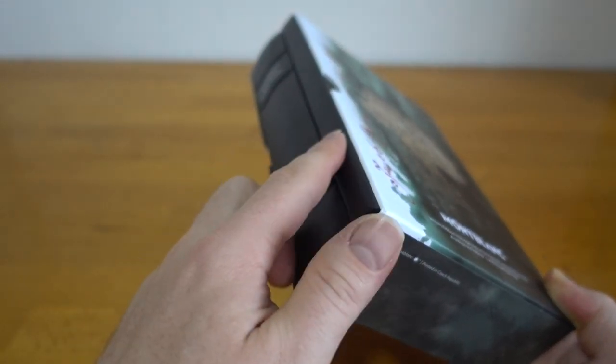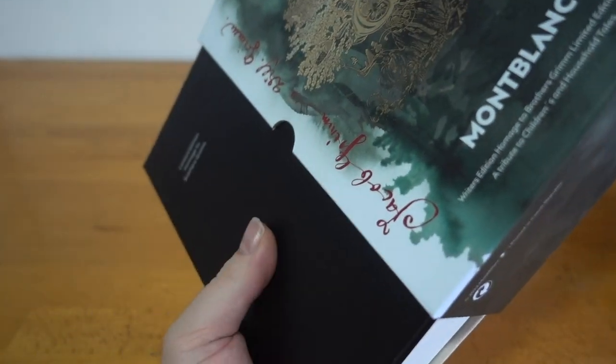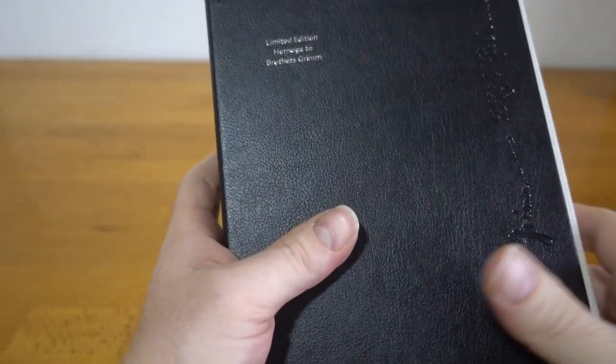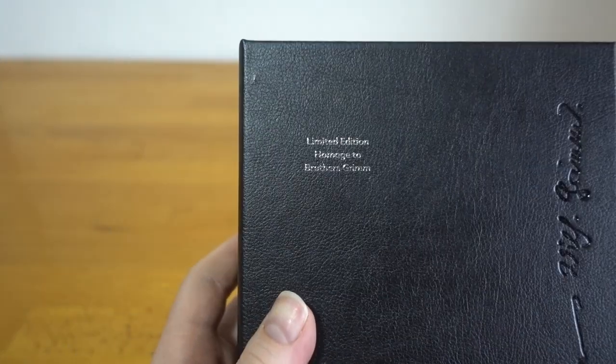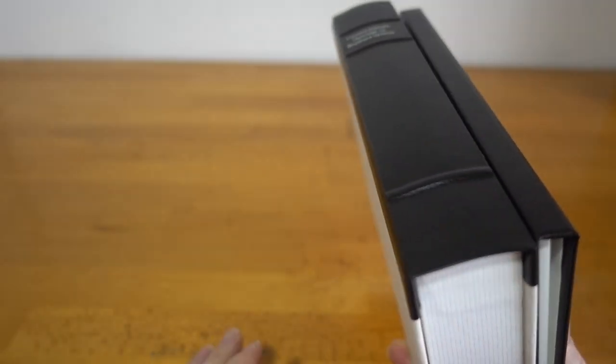These limited editions also come with a supplementary little pamphlet that usually contains an anecdote or some information from the author's lives. So this pen is dedicated to both Brothers Grimm, Jakob and Wilhelm.